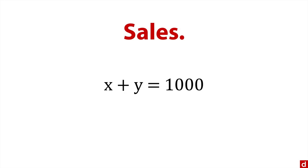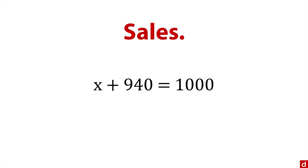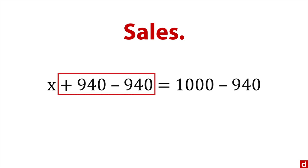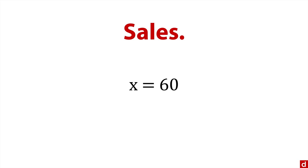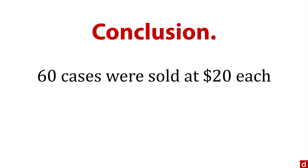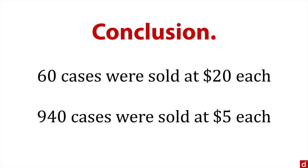So that's one of our values for sales. Let's go back to the sales equation: x plus y equals 1,000. We take the value we just got, 940, and substitute it into the equation. Then we can solve for x — just subtract 940 from each side — and we get x equals 60. So to recap: 60 cases were sold at $20 each, and 940 cases were sold at $5 each.